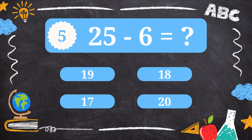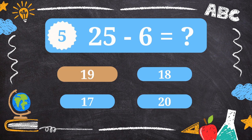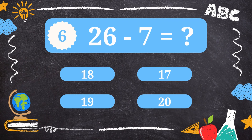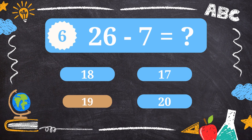Question 5. What is 25 minus 6? 19. Question 6. What is 26 minus 7? 19.